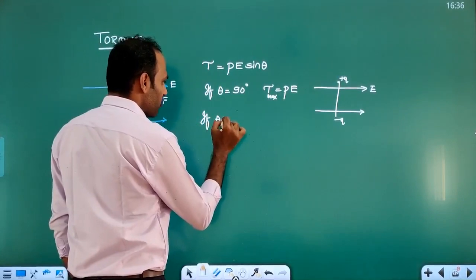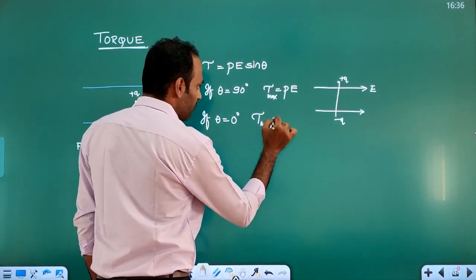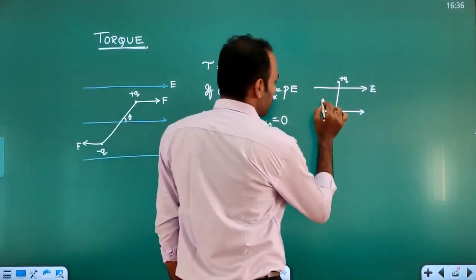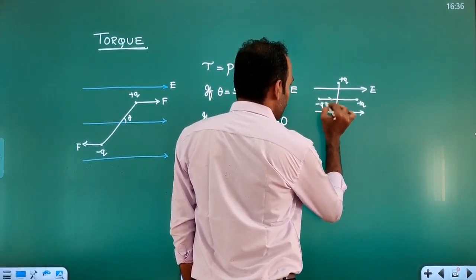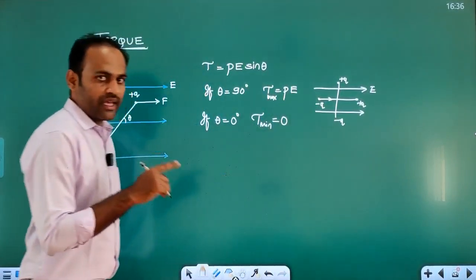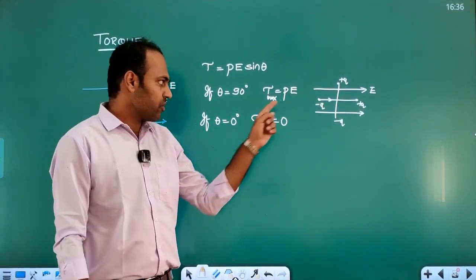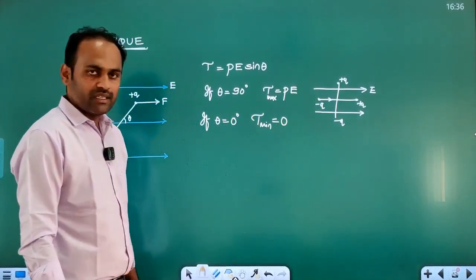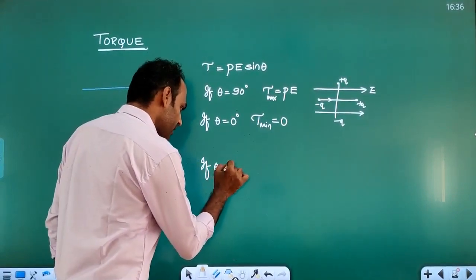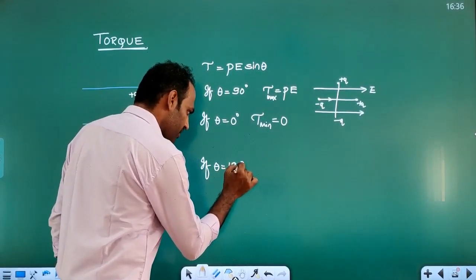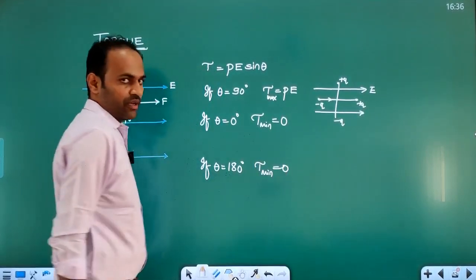What if theta is equal to 0 degrees? Then torque will be minimum, which will be equal to 0. When theta is equal to 0 degrees, the dipole is parallel to the electric field, and the torque will be minimum.